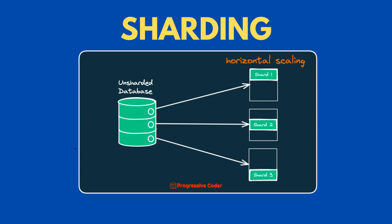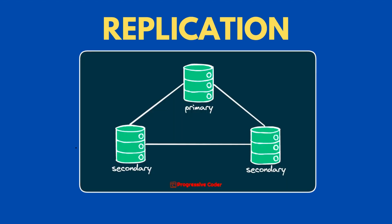This speeds up query times because the result set is smaller, and it also increases overall reliability. Replication, on the other hand, involves creating multiple copies of the database with each copy running on a different server. Each copy of the database is identical, and changes made to one copy are propagated to the others. The main benefit of replication is an increase in high availability and reliability. Replication also helps improve read scalability since read requests can be served by multiple servers.